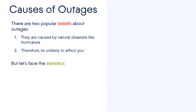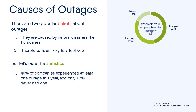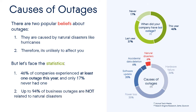According to well-known and reliable sources such as Actual Tech Media, the number of companies that experience at least one outage this year has increased 9% as compared to the previous year and has reached 46% overall. Moreover, 94% of business outages are related to power loss, hardware failure, software updating, and accidental data deletion — not to natural disasters.